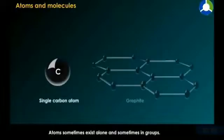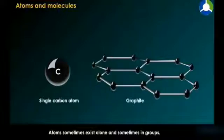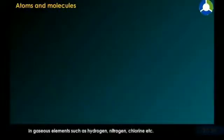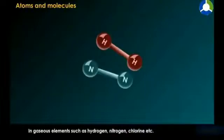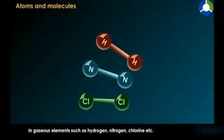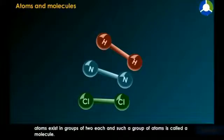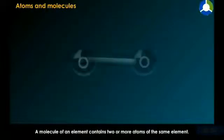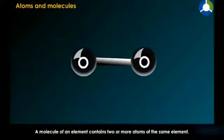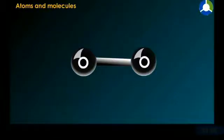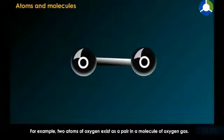Atoms sometimes exist alone and sometimes in groups. In gaseous elements such as hydrogen, nitrogen, chlorine, etc., atoms exist in groups of two each and such a group of atoms is called a molecule. A molecule of an element contains two or more atoms of the same element. For example, two atoms of oxygen exist as a pair in a molecule of oxygen gas.